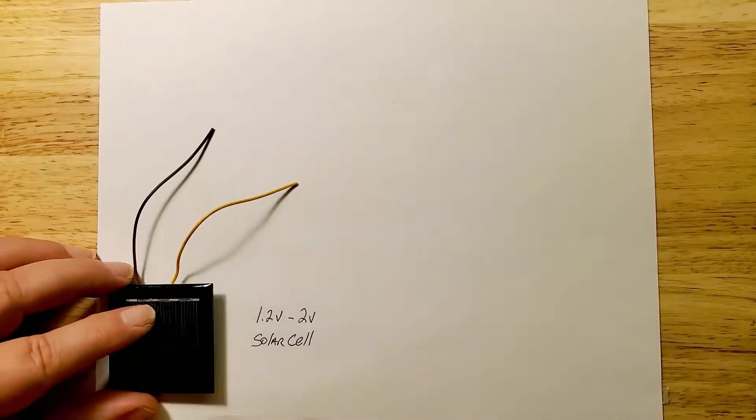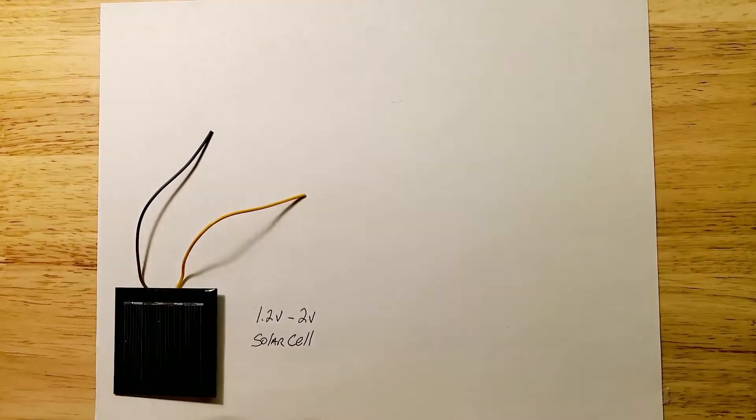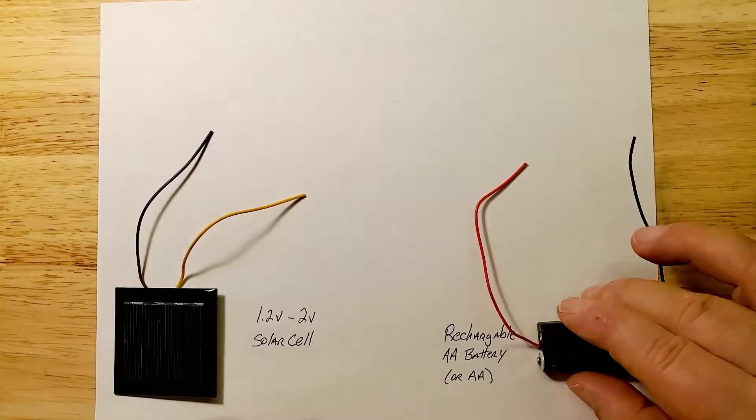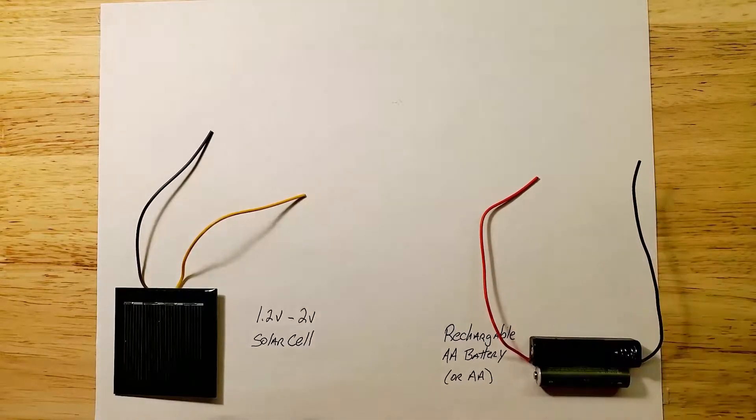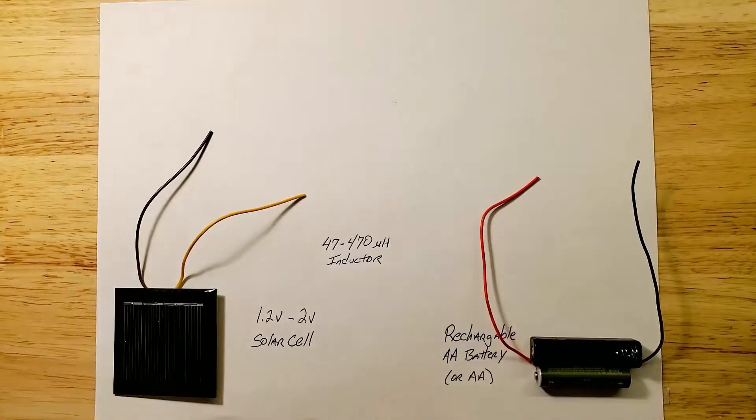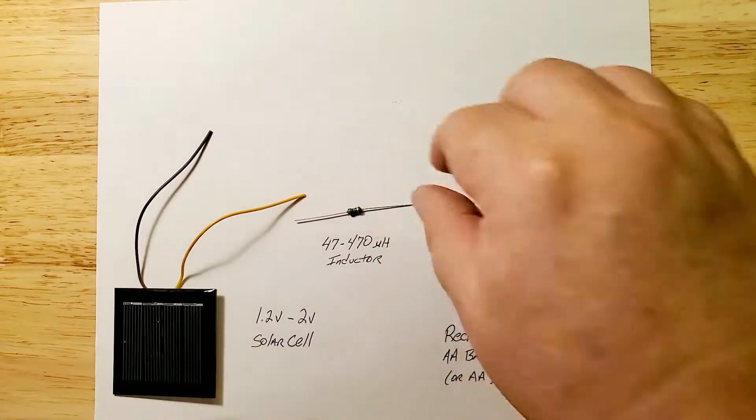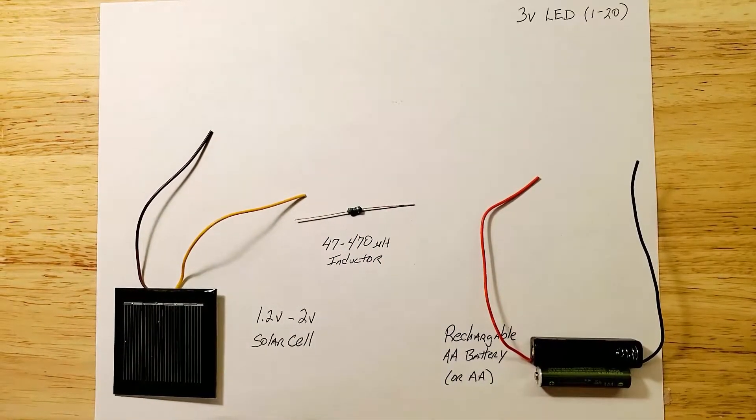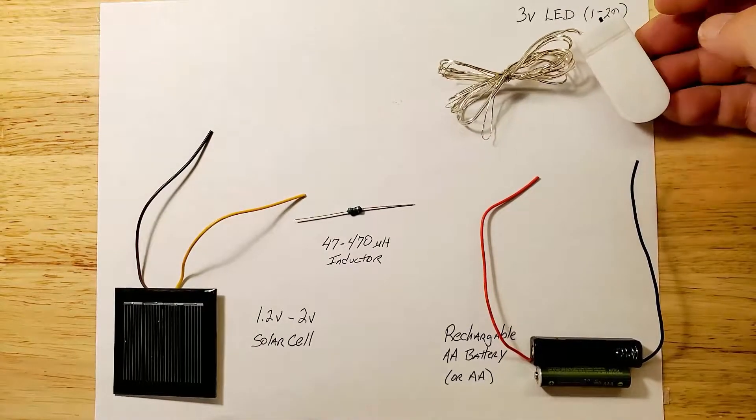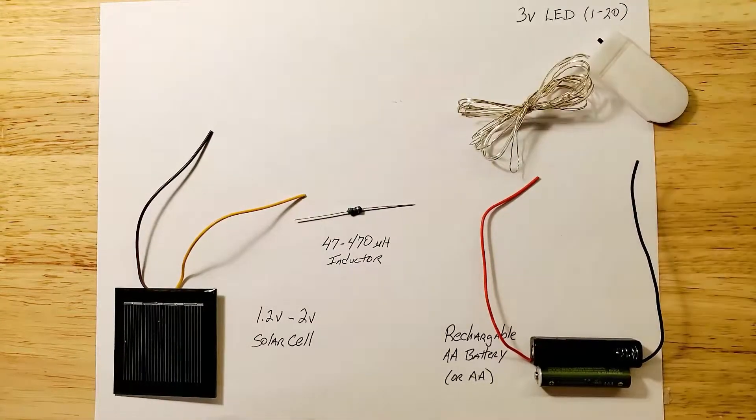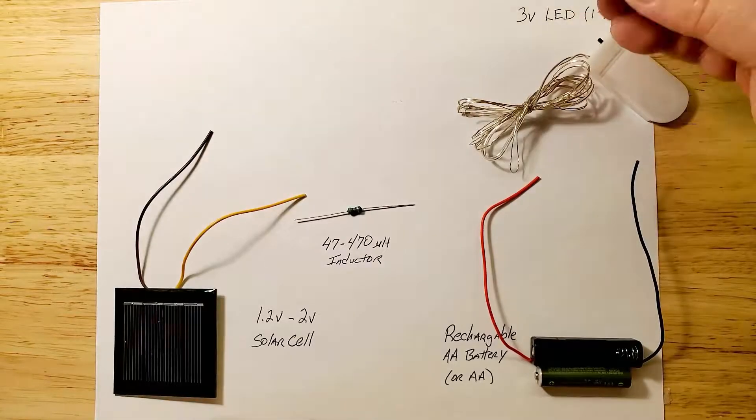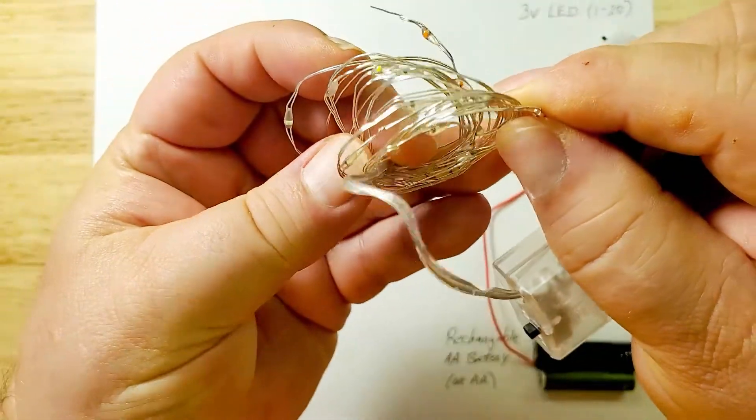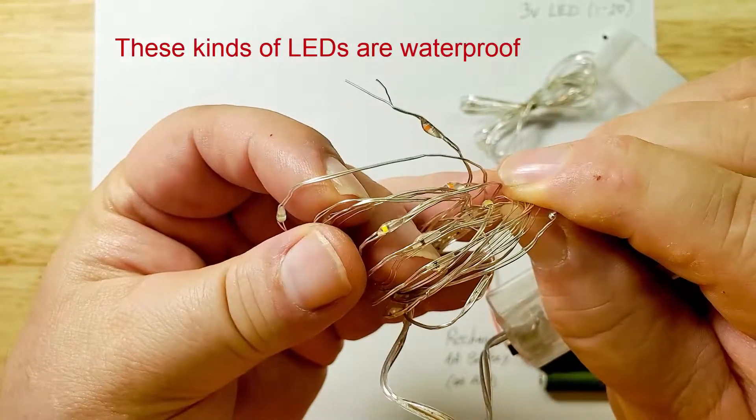You have a 1.2 to 2 volt solar panel. A rechargeable battery, AA or AAA. An inductor with a value between 47uH and 470uH. Your choice of LEDs. I like these strings of fairy lights. With added benefit, they are waterproof. And they come in all kinds of colors.